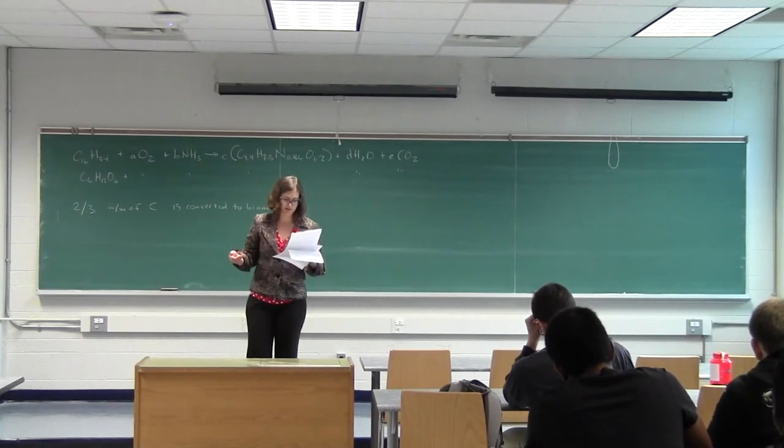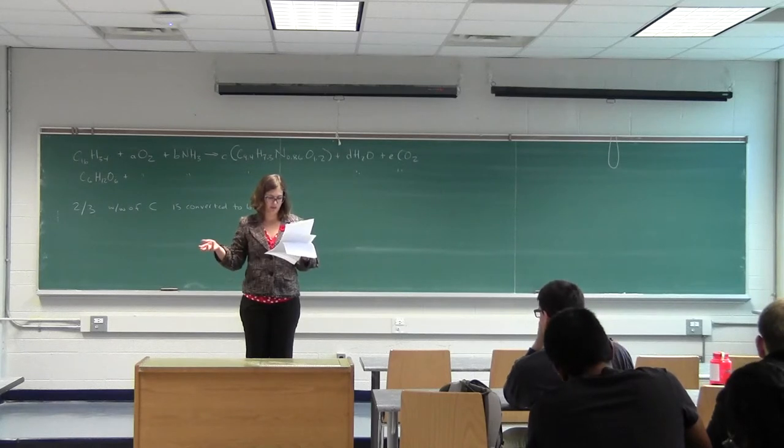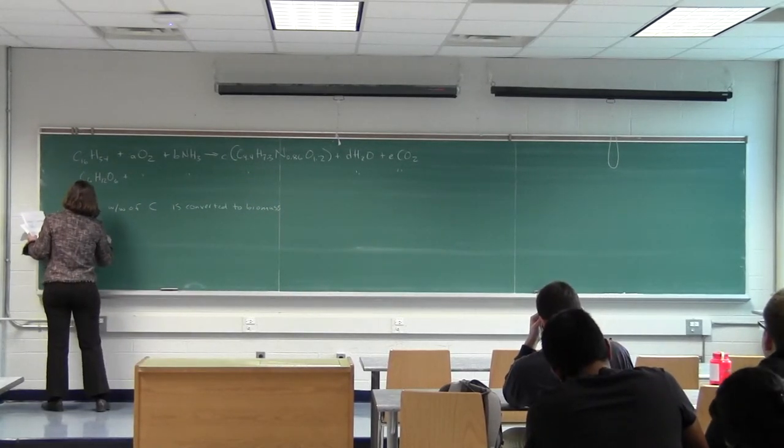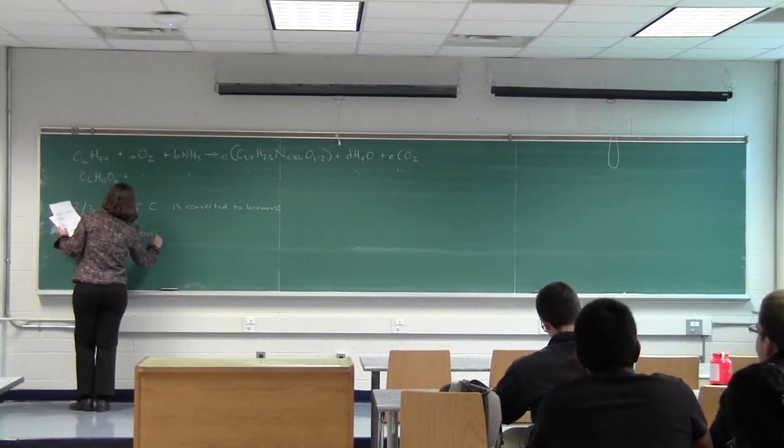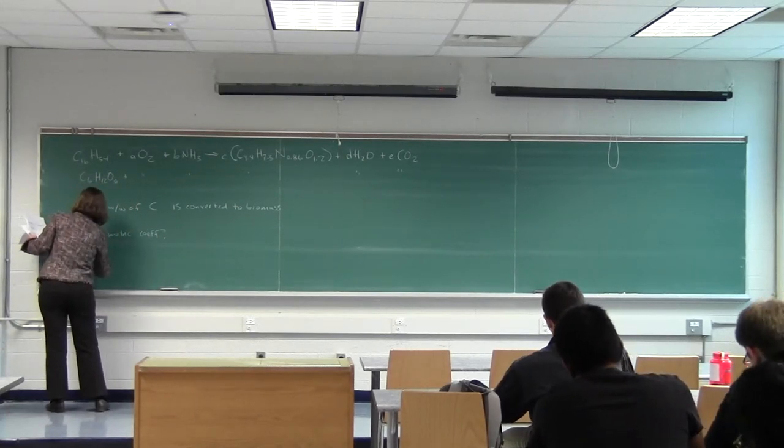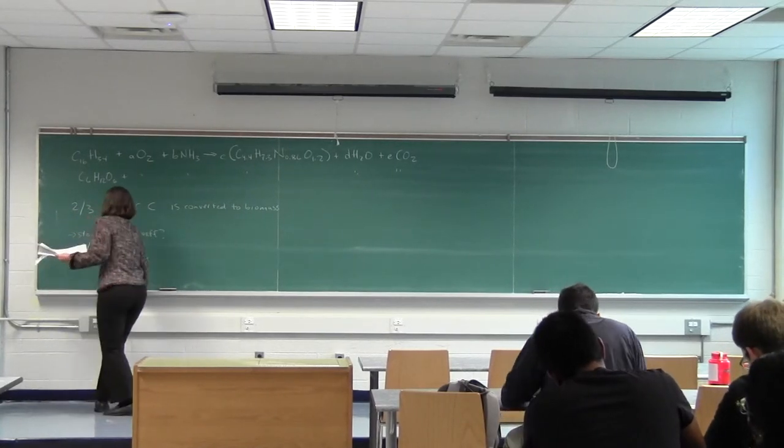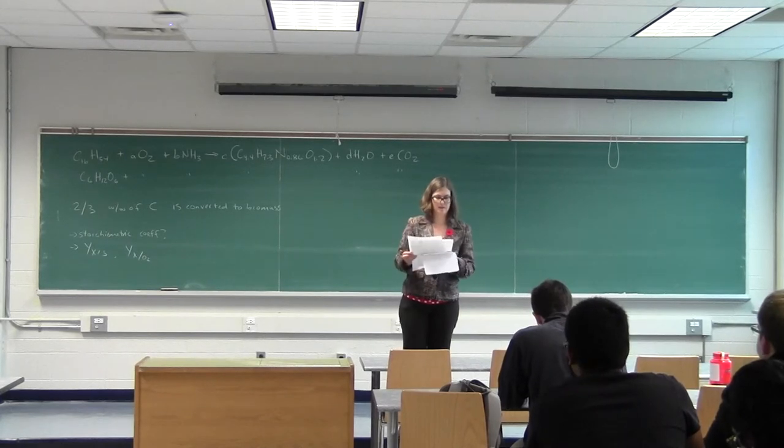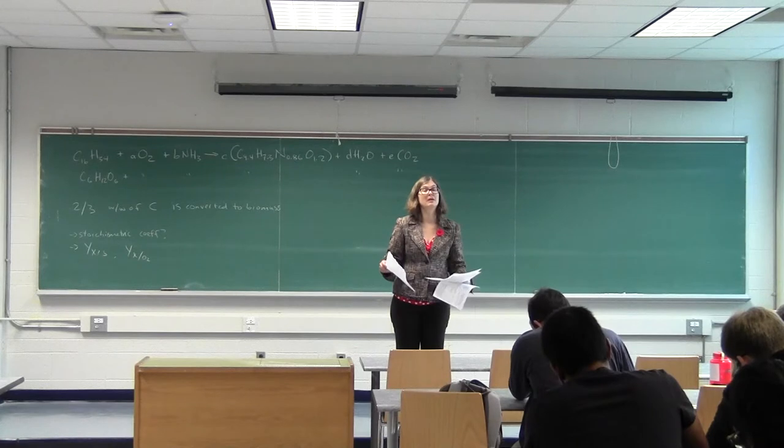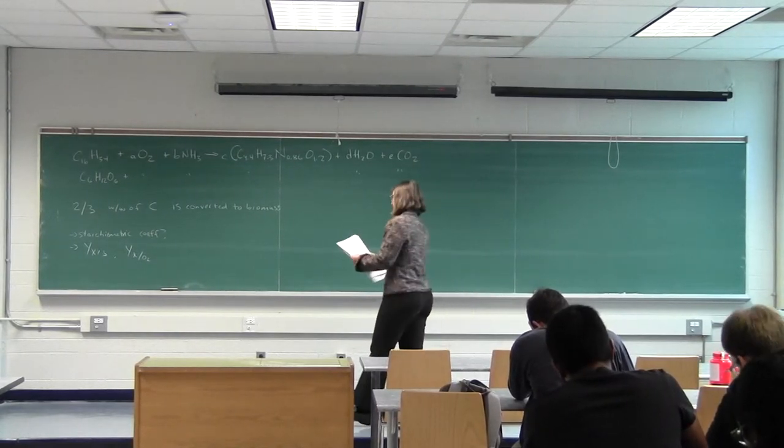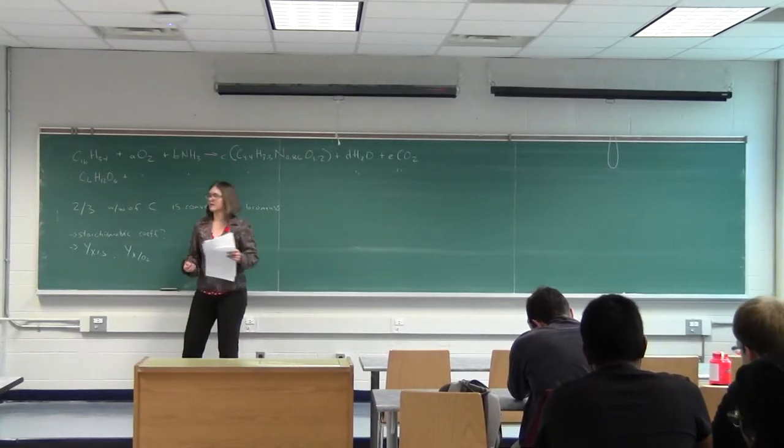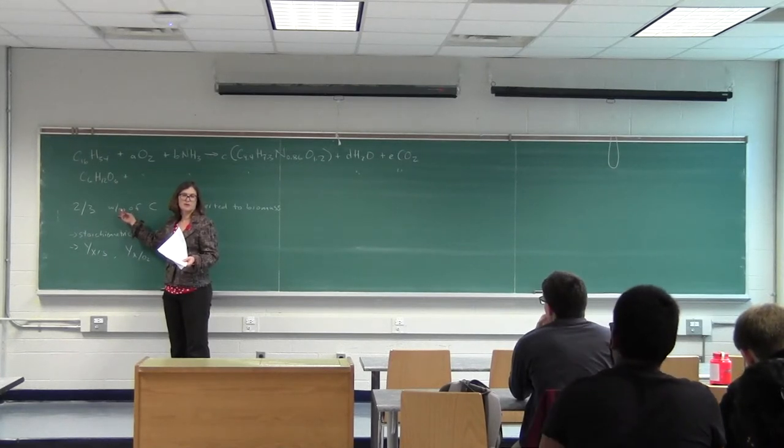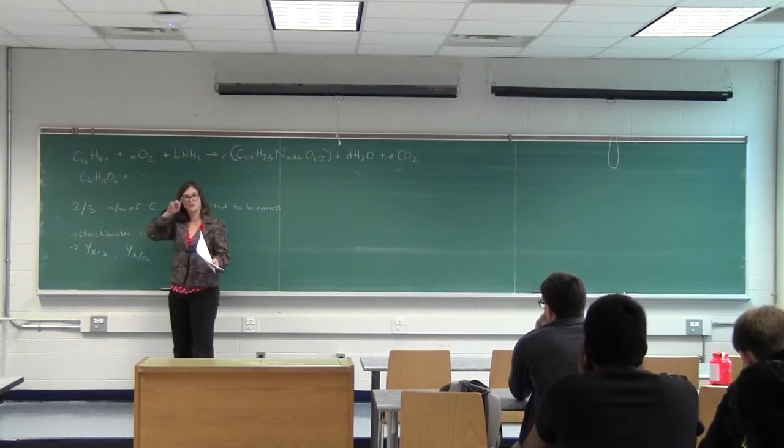This is example 7.1 from your text. It's asking what are the stoichiometric coefficients A, B, C, D, and E in each case. And then after that we'll calculate yield coefficients, grams cells per gram substrate and gram cells per gram O2. So how would we get started? Do the elemental balances. The only tricky thing about this question is that it's told you weight per weight instead of mole per mole, so you're going to have to do some conversions based on molecular weights.